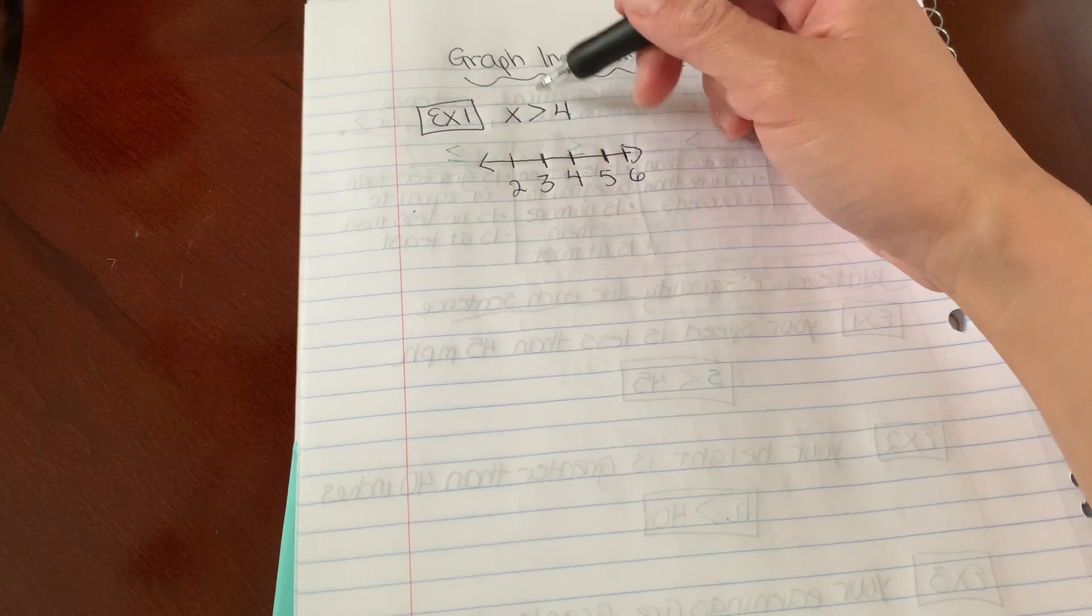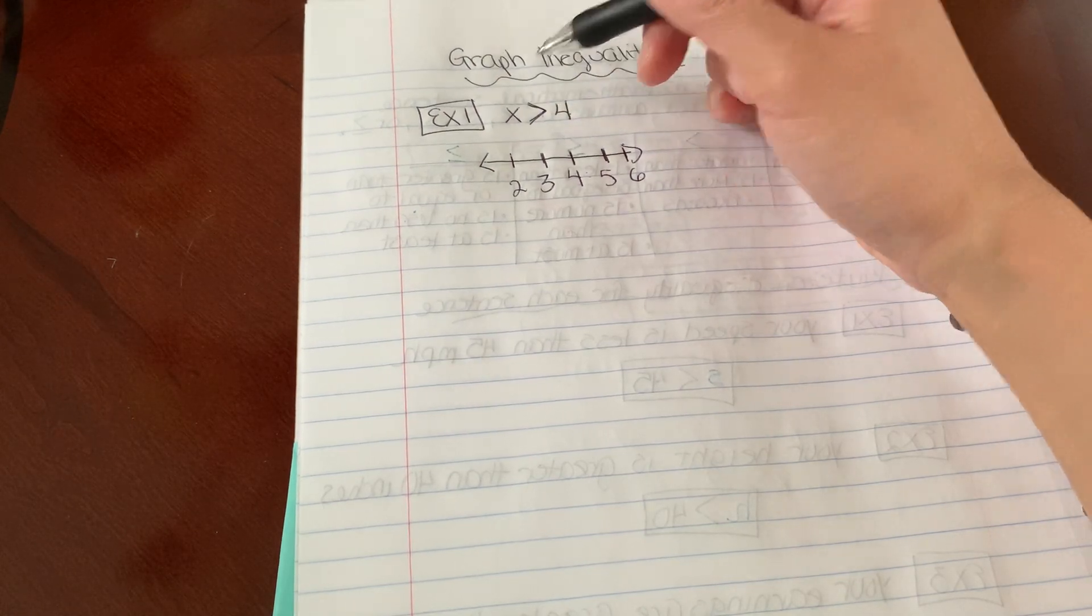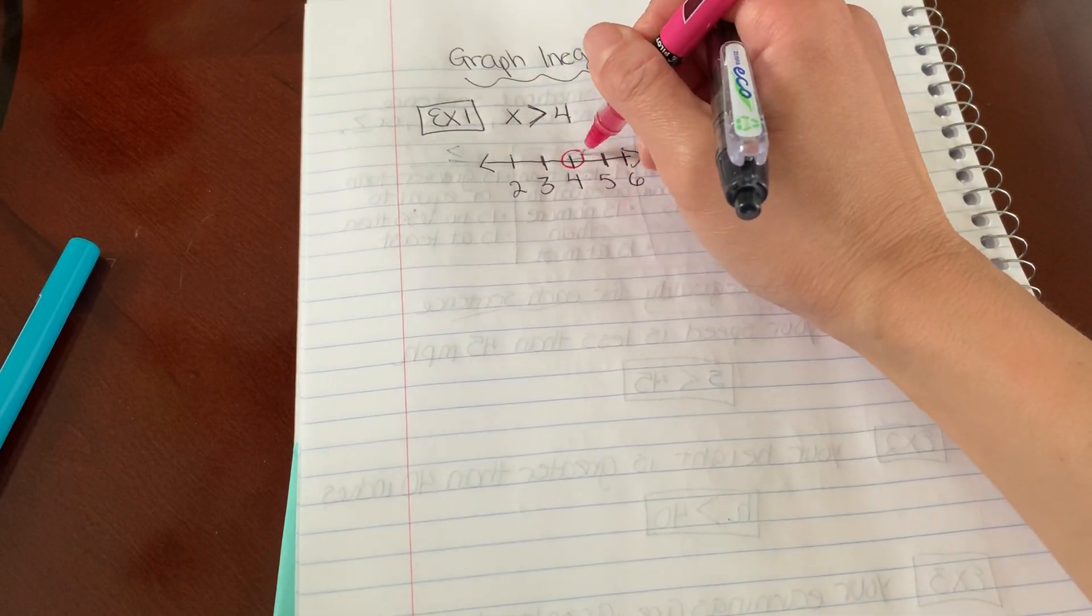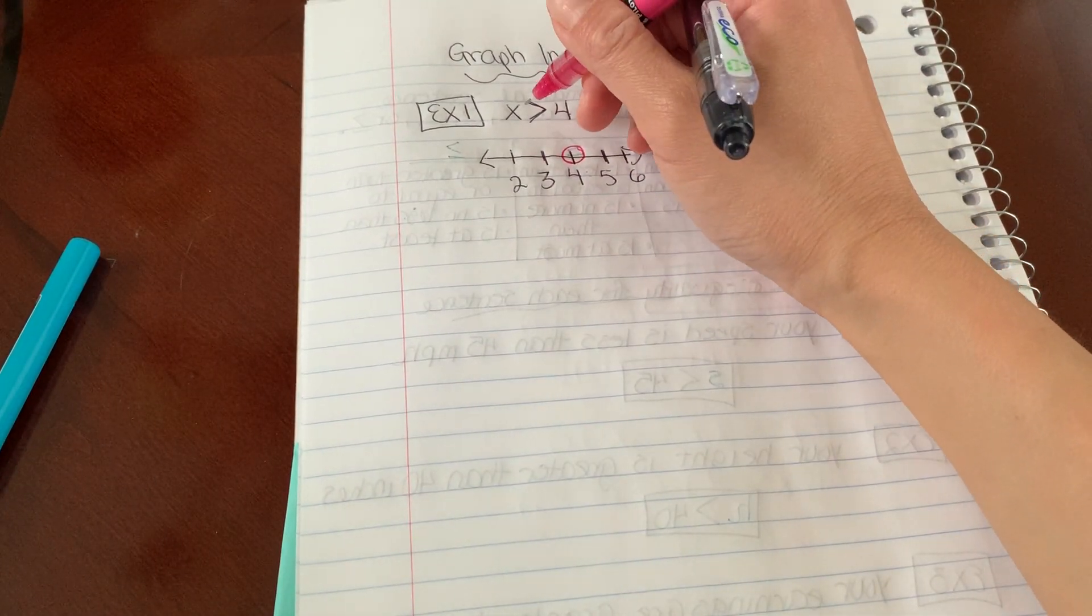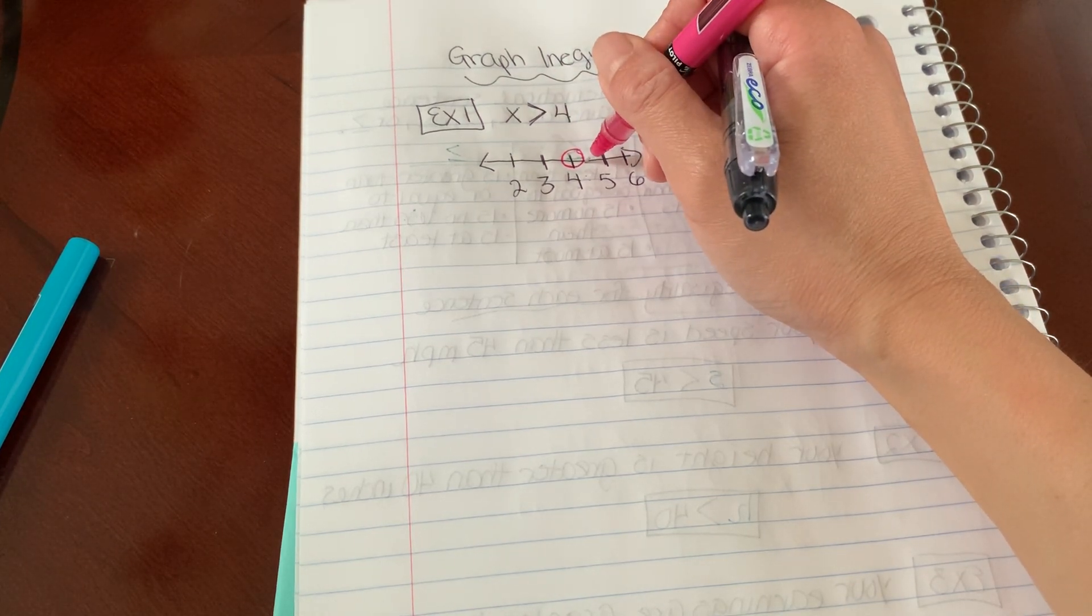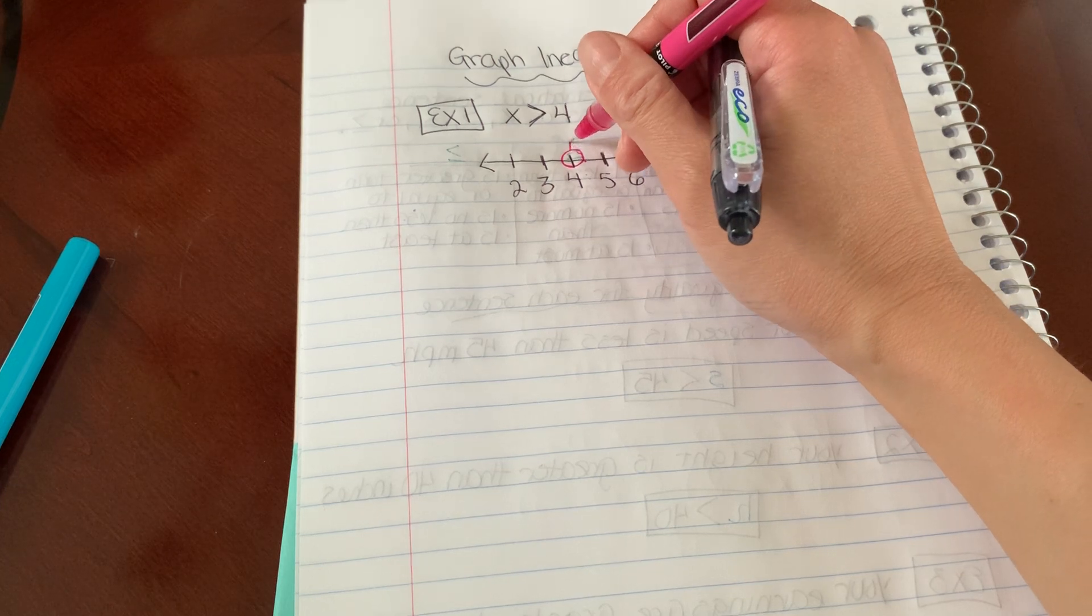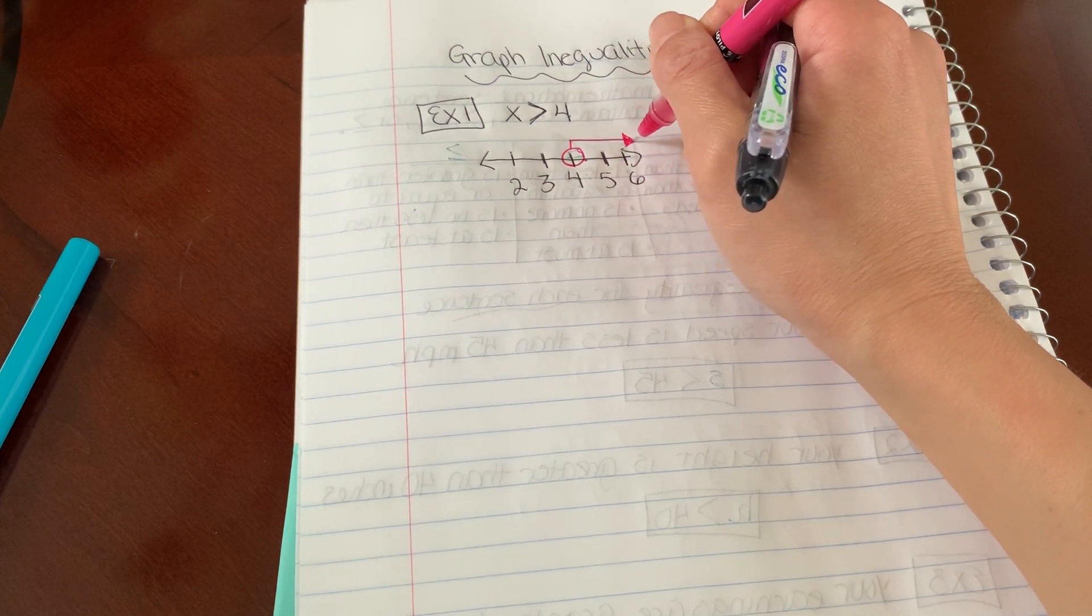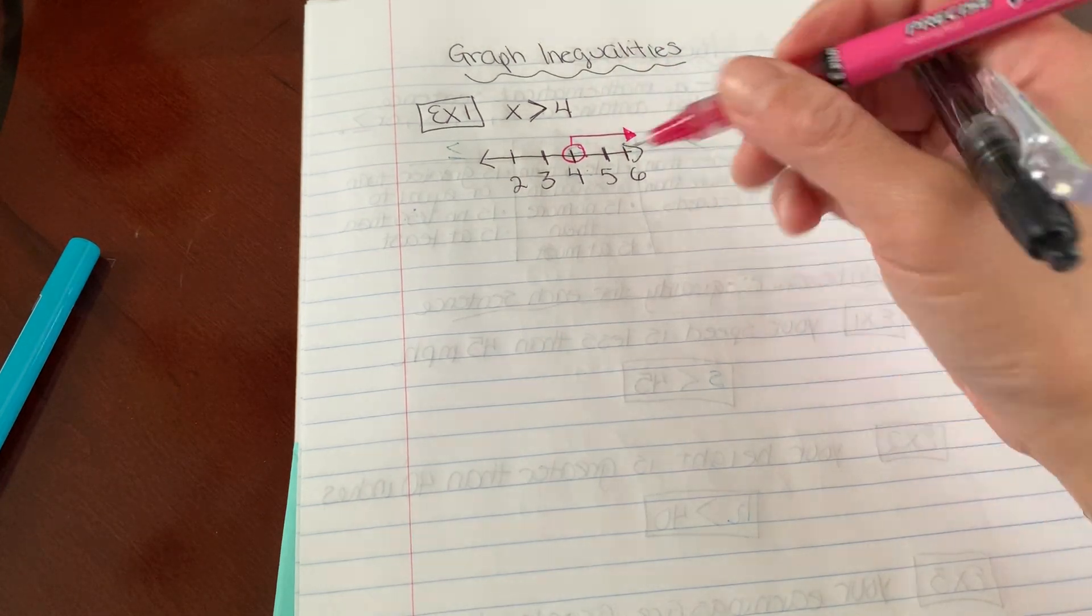Since it is a greater than symbol, I'm going to use an open circle. Meaning whatever X, whatever the value of X is, it does not include 4 in my graph. Since X is greater than 4, I'm going to draw an arrow pointing towards all the numbers greater than 4.